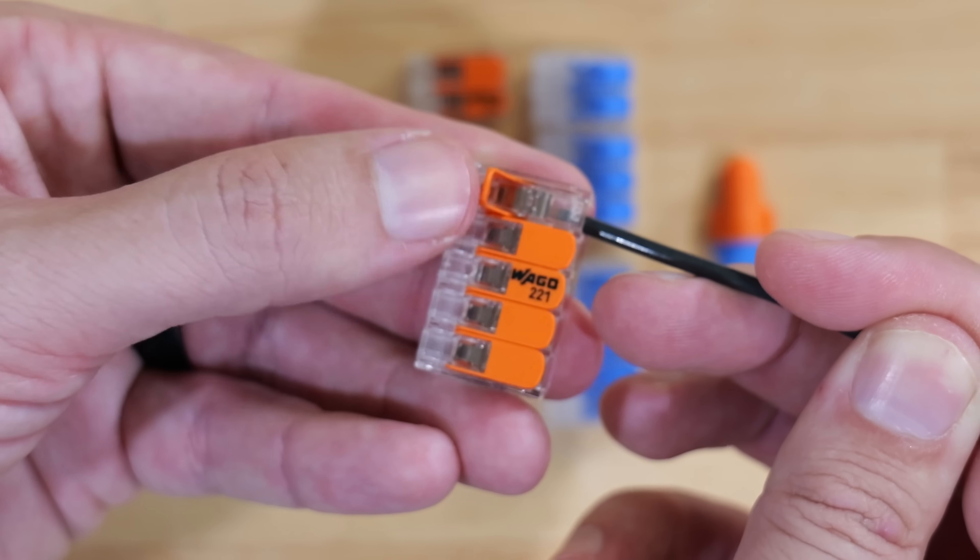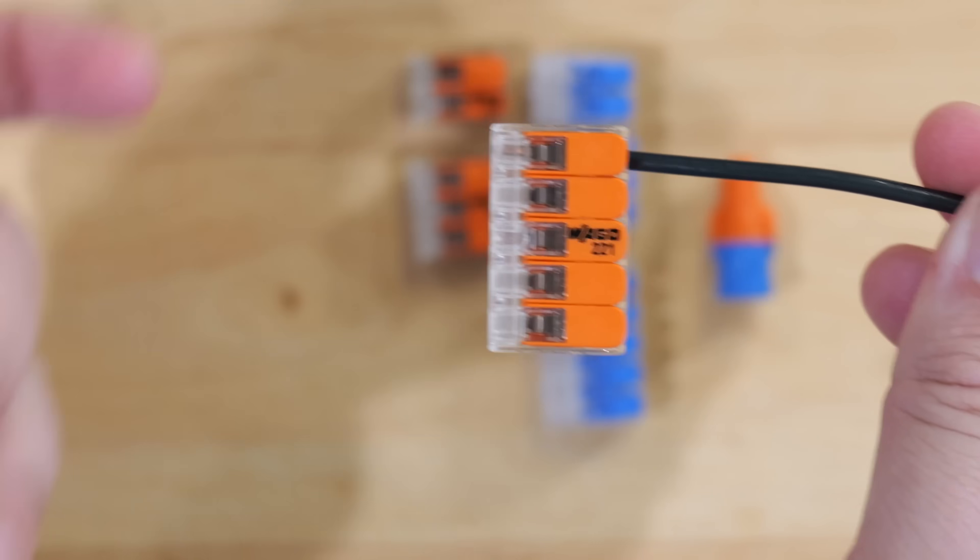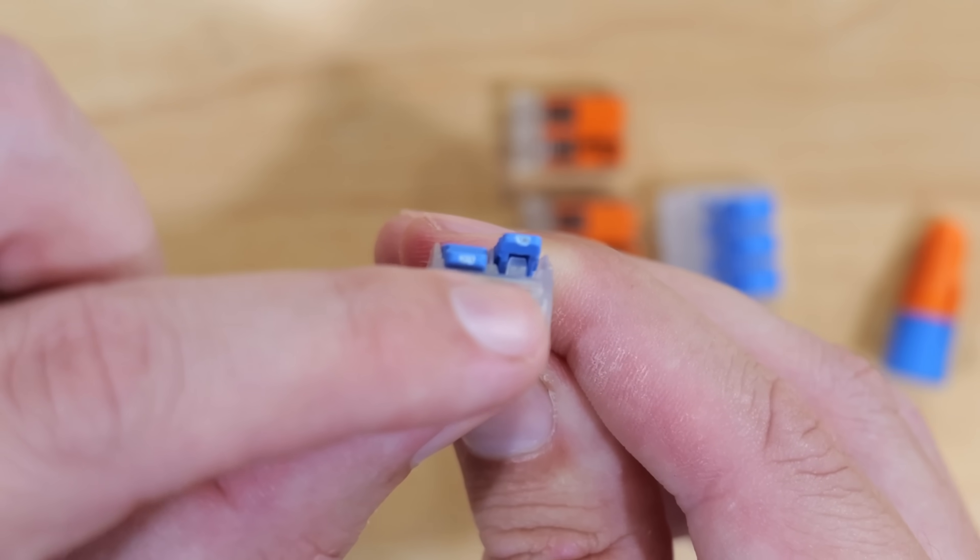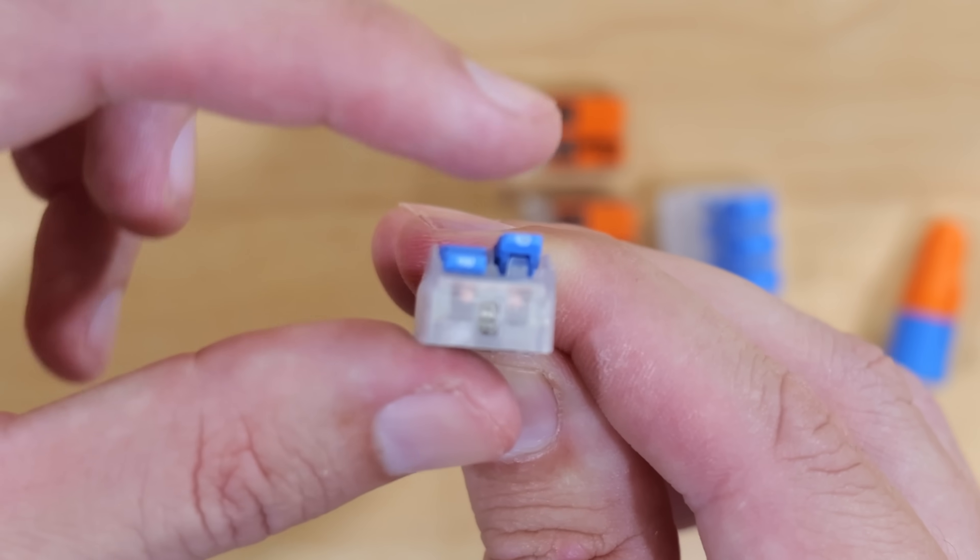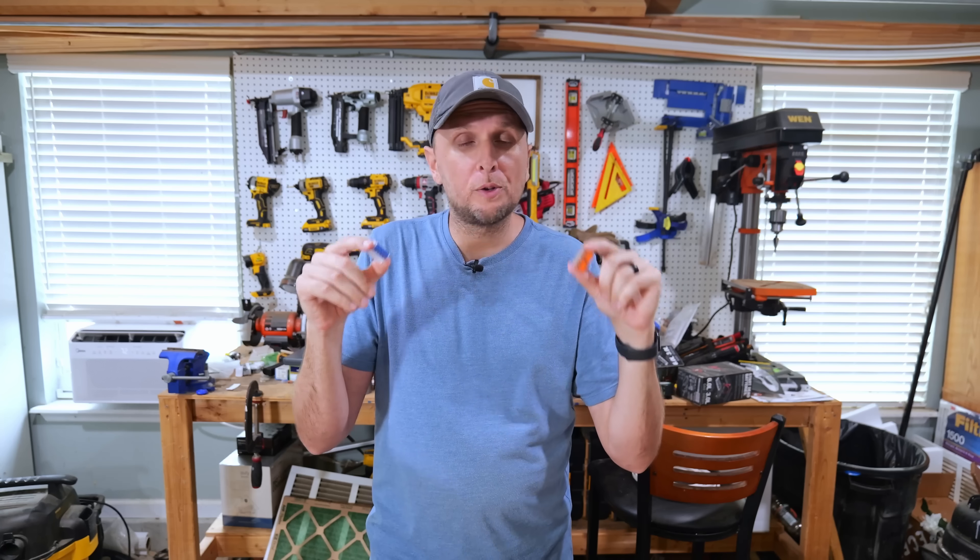When we compare the WAGO 221 to the Ideal Ensure lever nut, while the Ideal Ensure lever nut did have some really cool features and some added safety features to it, at least in my opinion, the WAGO has been around for so long. It has been tested. It has been proven. Again, like we've already talked about numerous times, it ultimately comes down to you, the installer. You've got to make sure that everything is being installed properly. And if we look at it at face value and you are installing them properly, then no, the Ideals do not just replace the WAGOs.